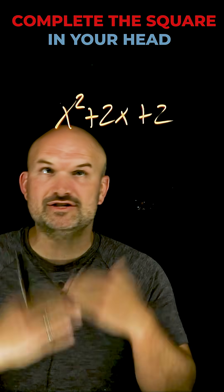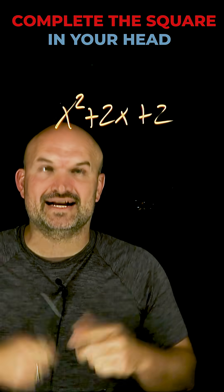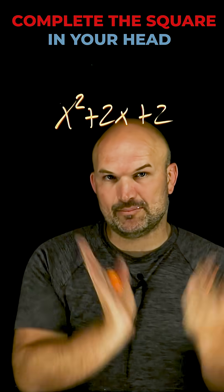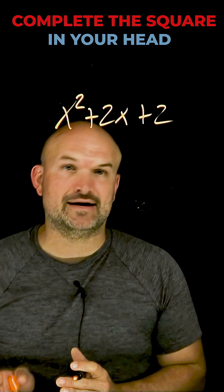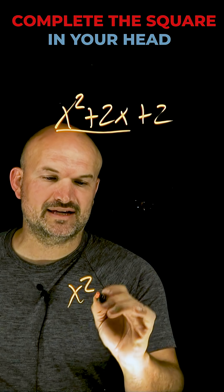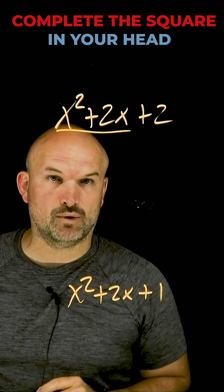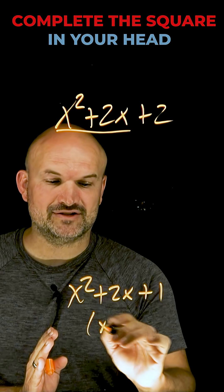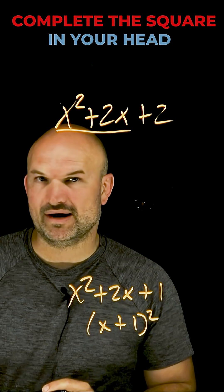Now, what I want you to understand about completing the square is that it's all about creating a perfect square trinomial that we can factor down to a binomial squared. So when I see x² + 2x, I immediately think of x² + 2x + 1. That is a perfect square trinomial that can be factored down to (x + 1)².